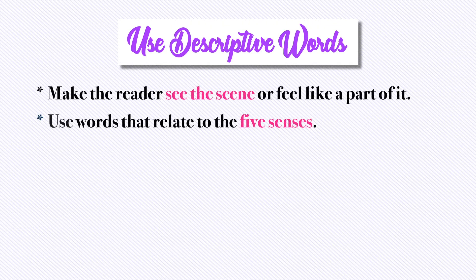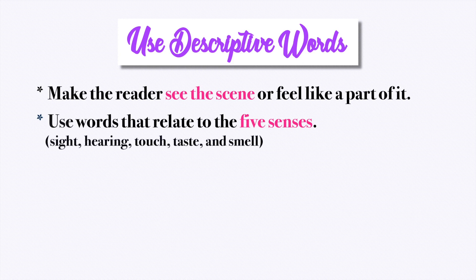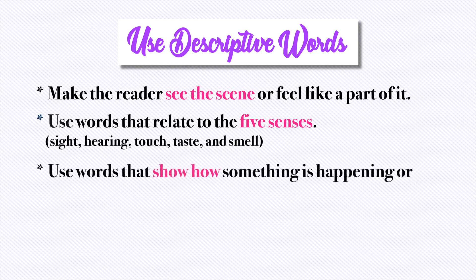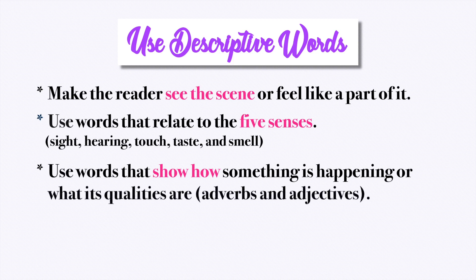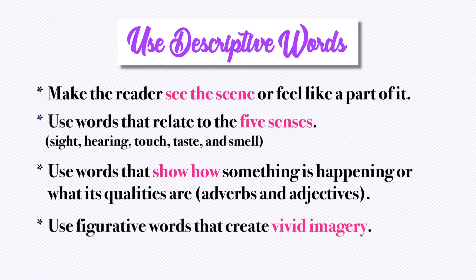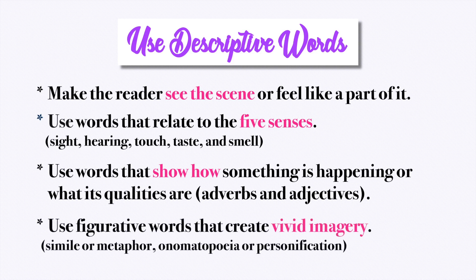And lastly, use descriptive words. Make the reader see the scene or feel like a part of it. Use words that relate to the five senses: sight, hearing, touch, taste, and smell. Use words that show how something is happening or what its qualities are — using adverbs and adjectives. And finally, use figurative words that create vivid imagery, such as simile, metaphor, onomatopoeia, or personification.